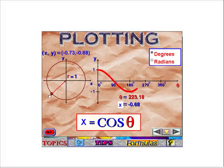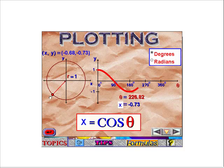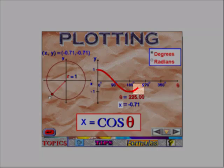In quadrant 3, cosine is still negative, so at the reference angle of 45 degrees in quadrant 3, we are still equal to negative 7 tenths. Here we are at 270 degrees, again the x value is equal to 0.